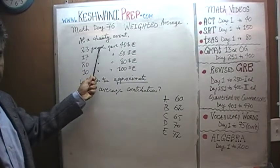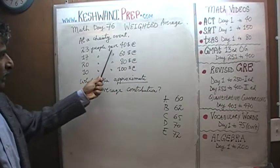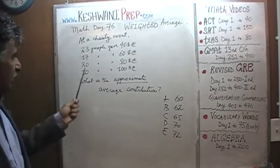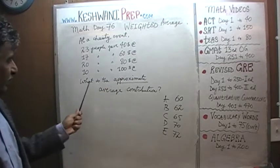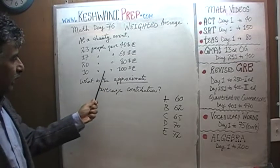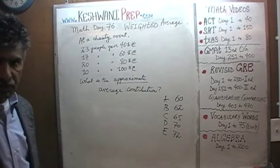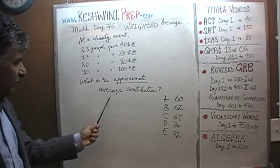We are told that at a charity event, 23 people gave $40 each, 17 people gave $60 each, 20 people gave $80 each, and 10 people gave $100 each. And the question simply is, what is the approximate average contribution?